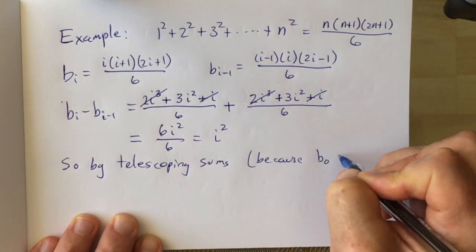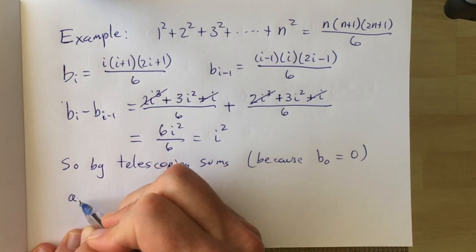and that i squared is equal to the i-th term on the left-hand side. That's your ai.